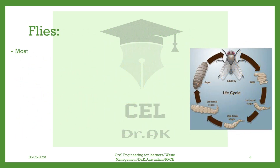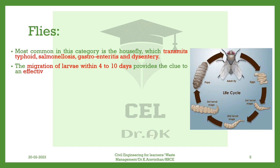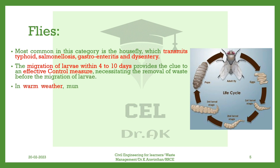Flies. The most common in this category is the housefly, which transmits typhoid, salmonellosis, gastroenteritis, and dysentery. The migration of larvae within 4–10 days provides the clue to an effective control measure, necessitating the removal of waste before the migration of larvae. In warm weather, municipal waste should be collected twice weekly for effective control.